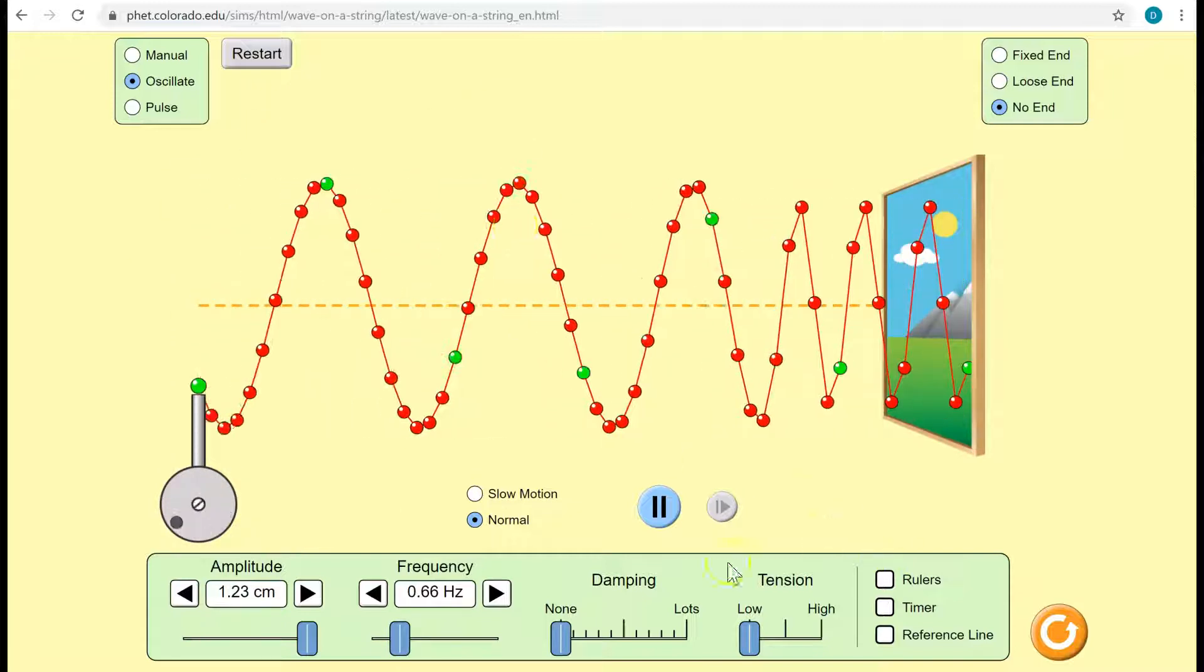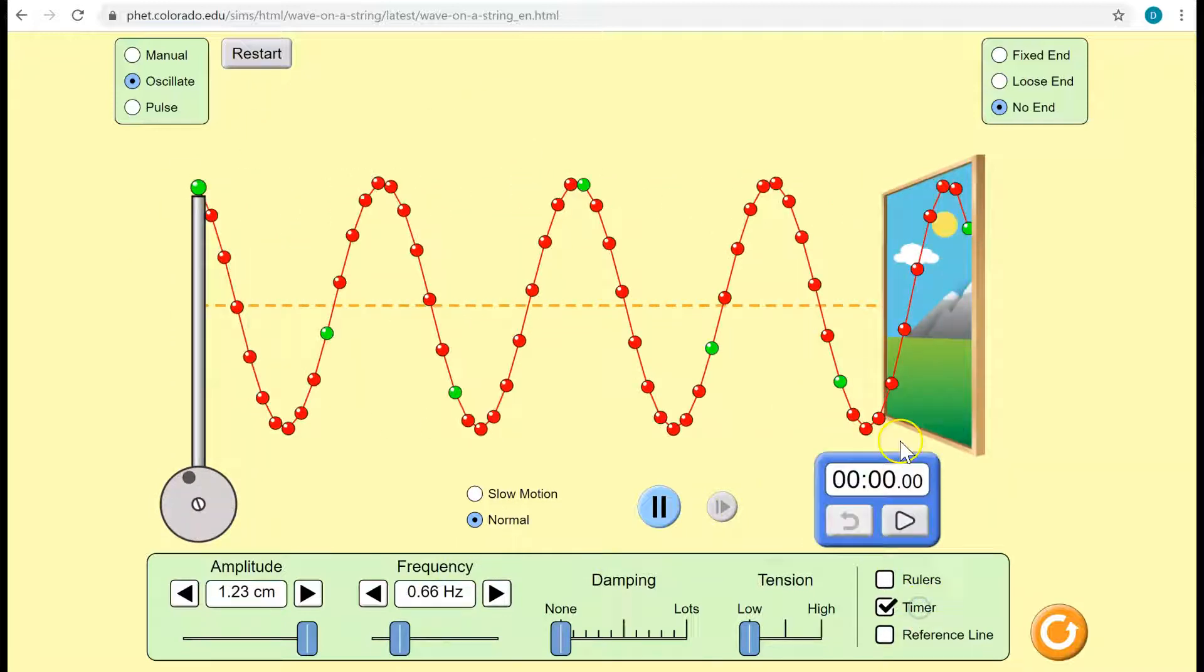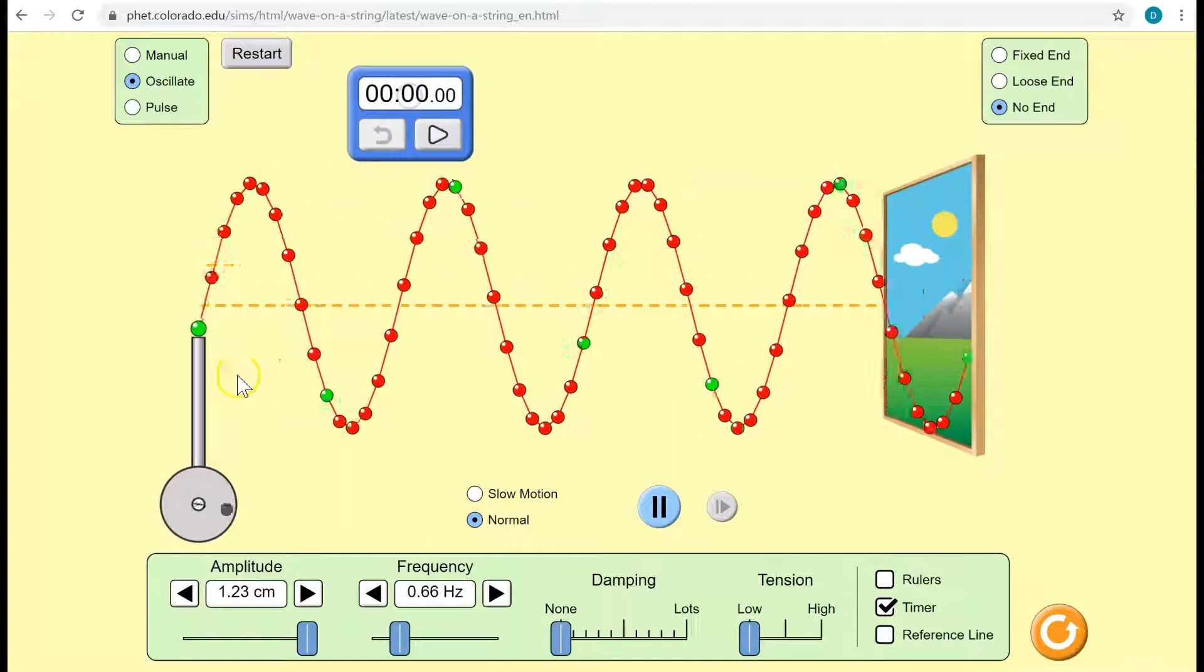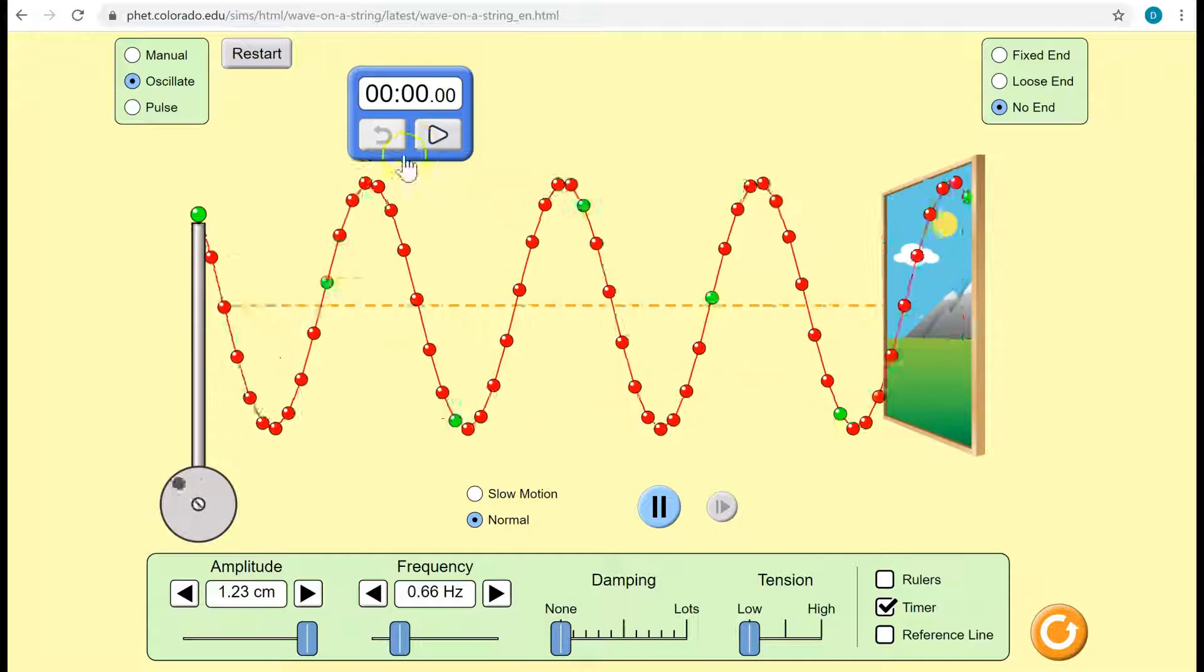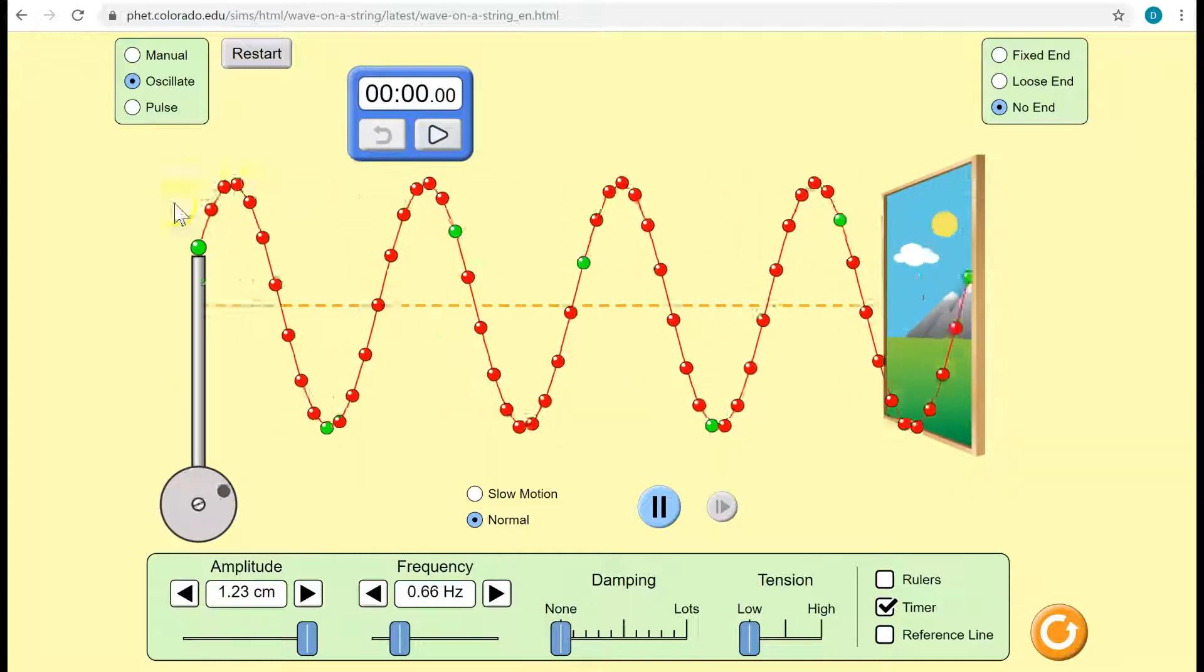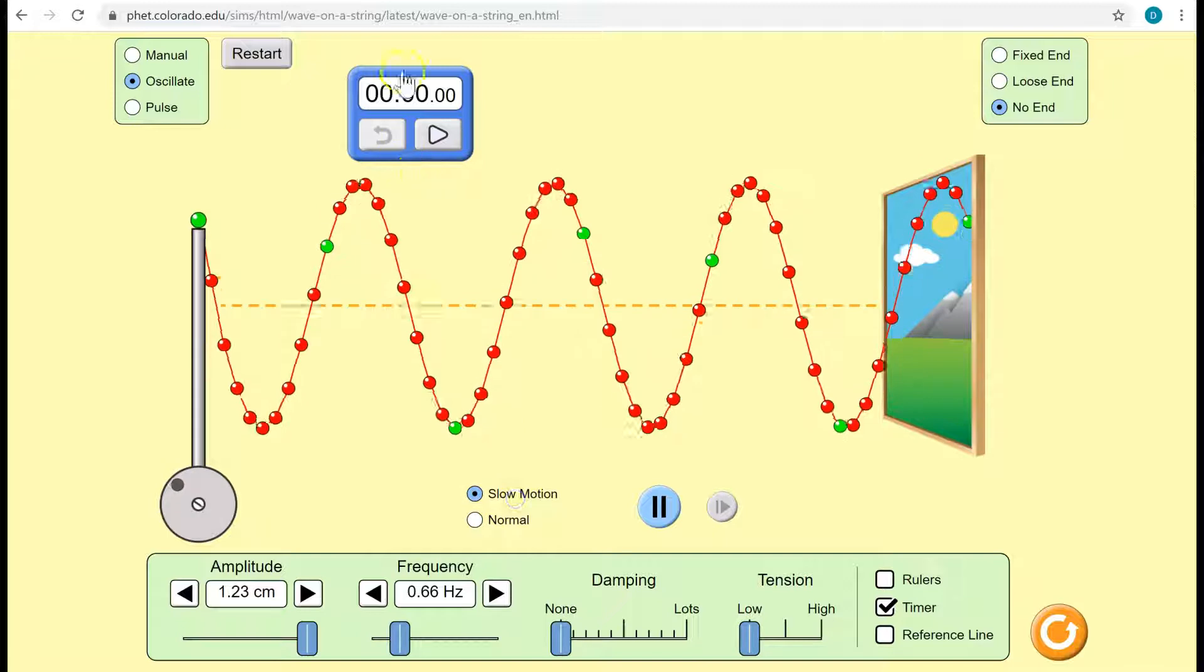Period, time period, is kind of the opposite of frequency. Time period is the time it takes for one wave to be produced. So if I start when this thing is at the top, and then let's go slow motion, I start it right here.